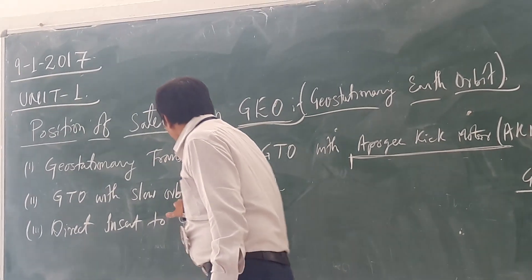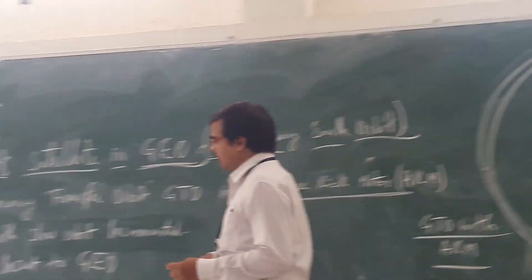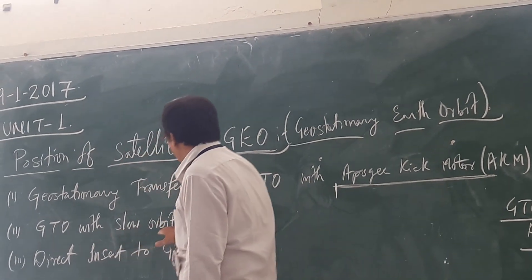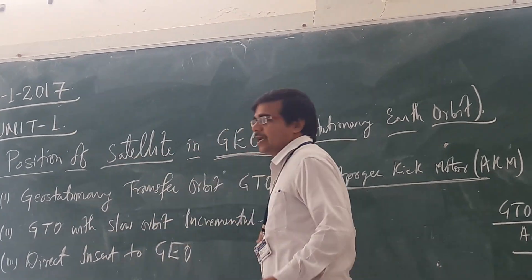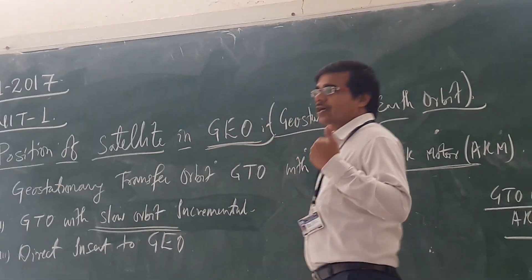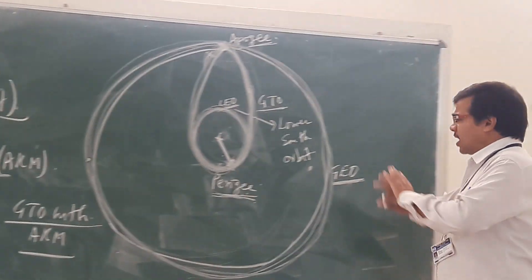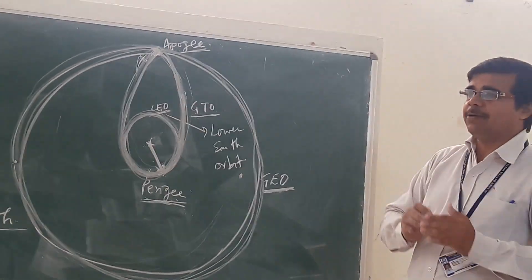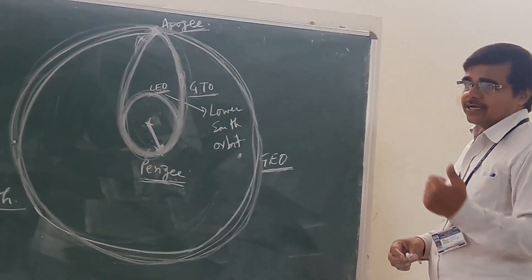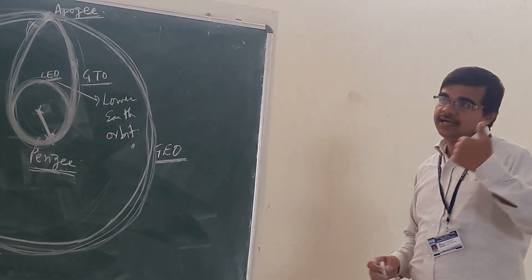The second method is Geostationary Transfer Orbit with Slow Orbit Incremental. The process is nearly the same, but there is a little bit of difference. Let us see what that difference is.